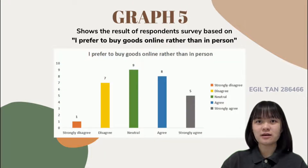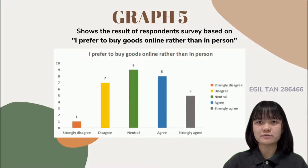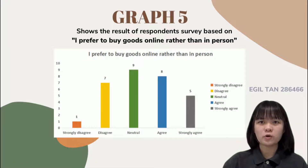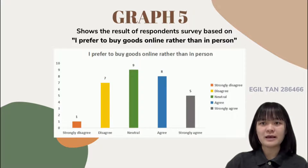Graph 5 shows survey results on 'I prefer to buy goods online rather than in person.' There are quite an average number of respondents with neutral decisions — 9 out of 30 chose neither agree nor disagree. Majority respondents are neutral because there are advantages and disadvantages to buying online. An advantage is shopping from home with no time limit on orders, while a disadvantage is not being able to physically touch the product before purchasing, which is the most inconvenient aspect of online shopping.